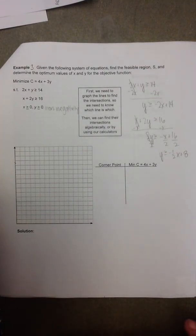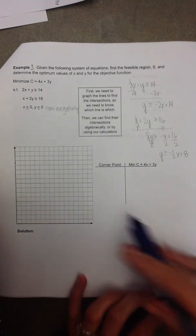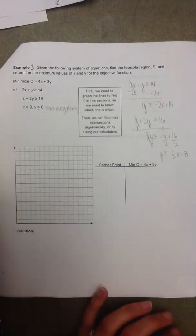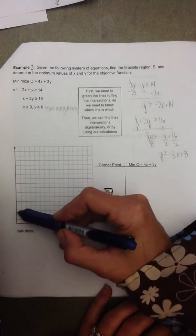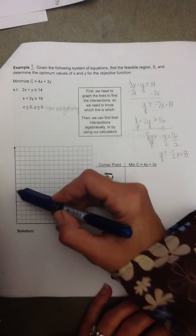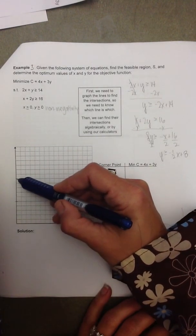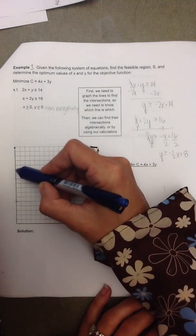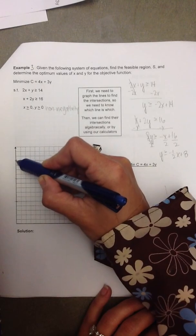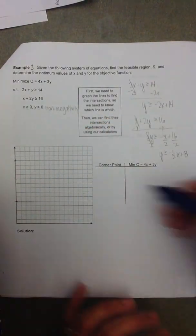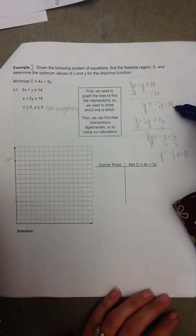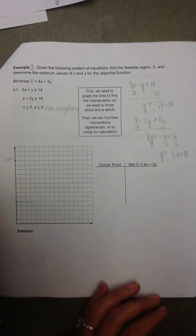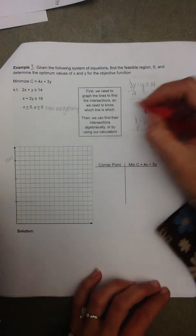So I'm going to have to determine how to make my graph. I know I need a y-intercept of 14, so given the size of this graph, I'm going to use increments of 1. So here's the point 0, 14, which is the y-intercept of the first equation.